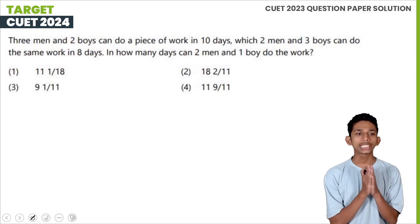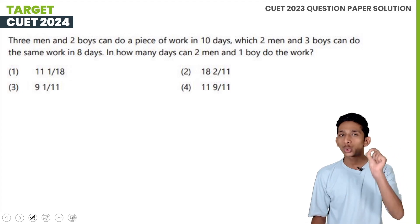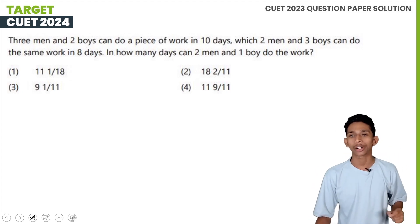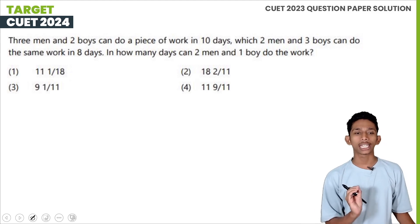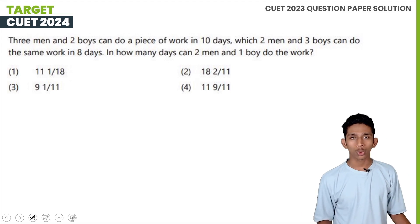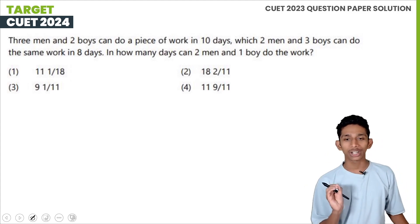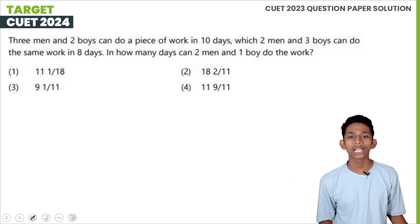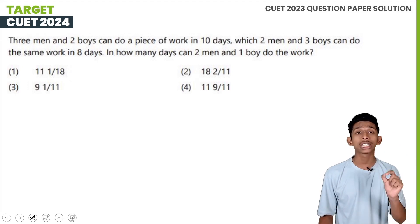Next question: 3 men and 2 boys can do a piece of work in 10 days. 3 men and 3 boys can do the same work in 8 days. In how many days can 2 men and 1 boy do the same work?